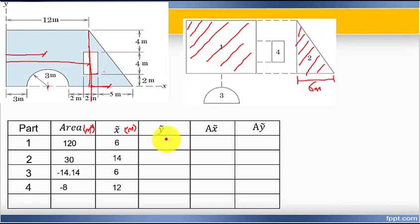Now y-tilde, the y coordinate. From origin 0,0, how much distance to the y center of each shape? For shape one, simply it's h over 2. The height is 10 meters, so h over 2 equals 5 meters.